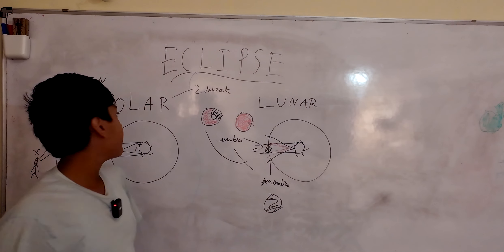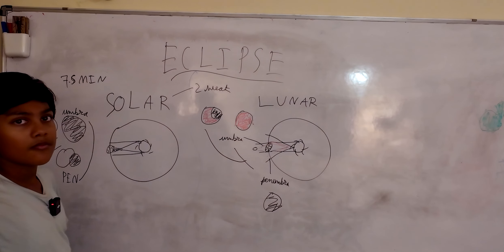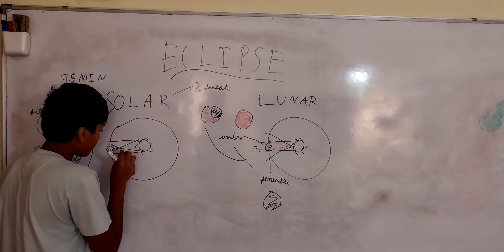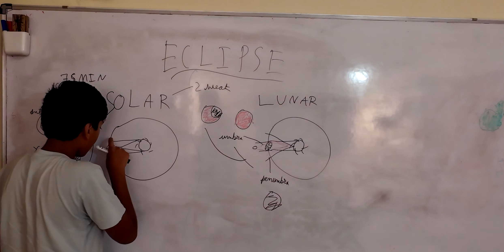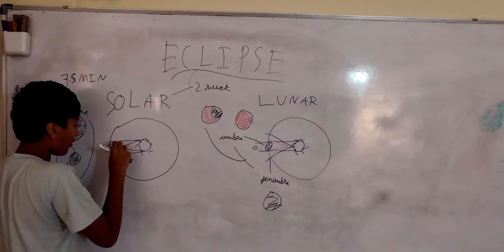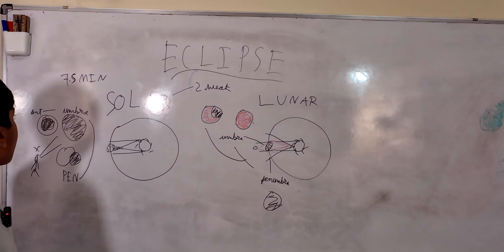Let's start with the first one, the solar eclipse. The solar eclipse happens when the moon comes in between the sun and the earth, blocking it and leaving some of the moon's shadow on the earth's surface.